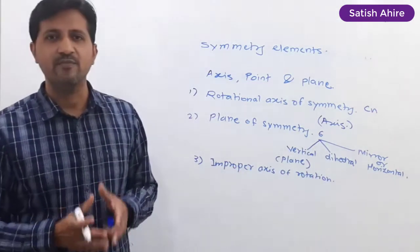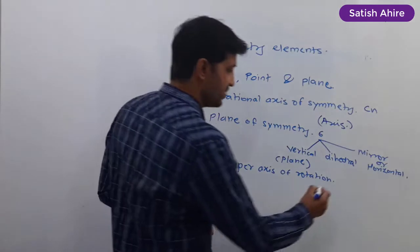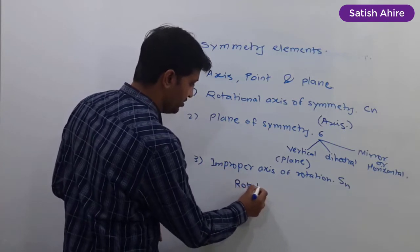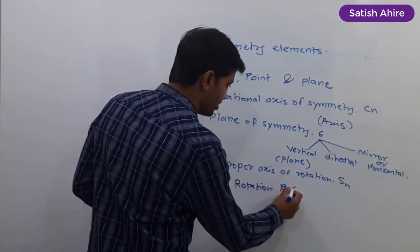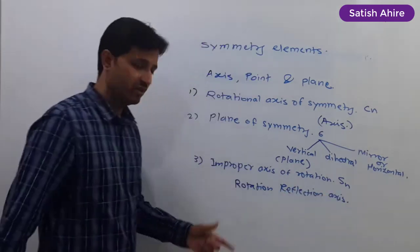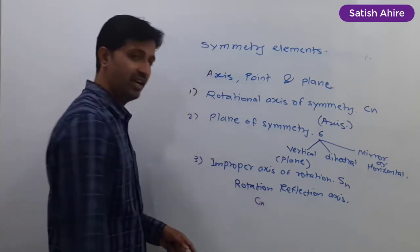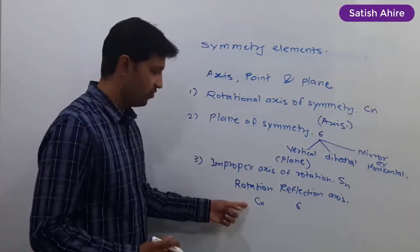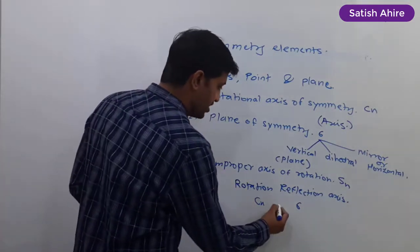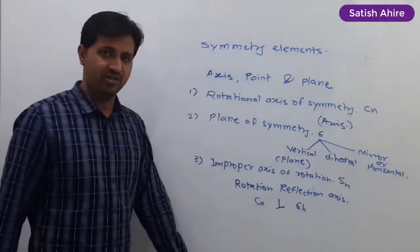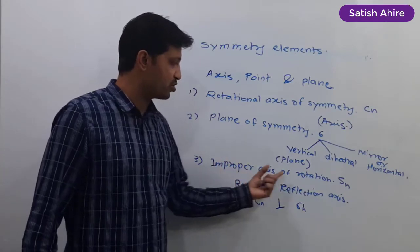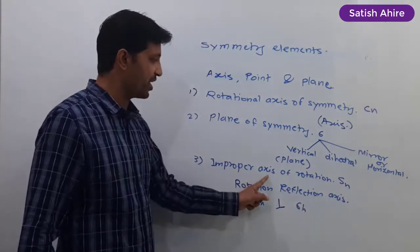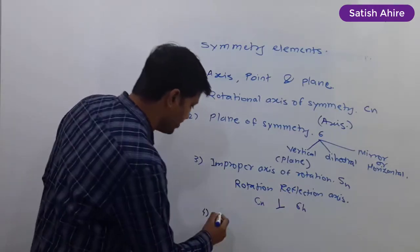The third symmetry element is the improper axis of rotation, labeled with the symbol S_N. This axis is also known as the rotation-reflection axis — rotation means it involves C_N, and reflection means it involves the plane of symmetry. Whenever the rotational axis is perpendicular to the horizontal plane, the improper axis of rotation is present.